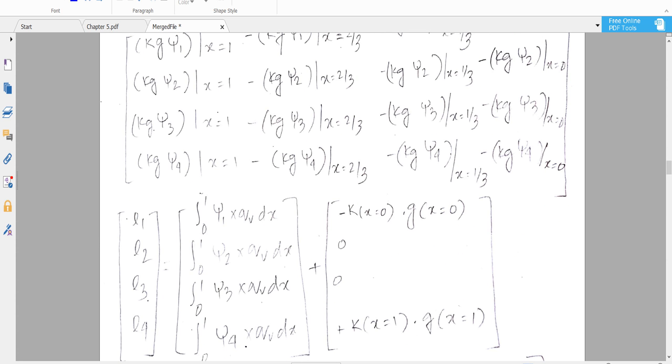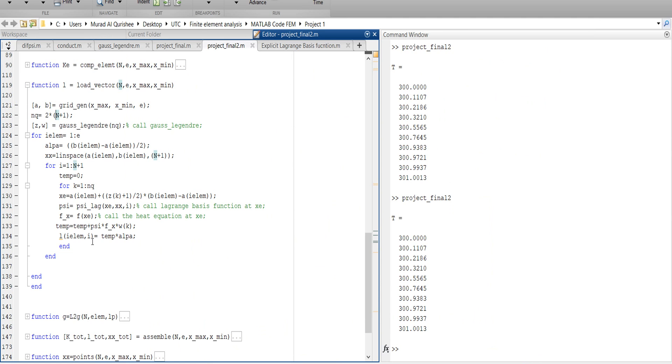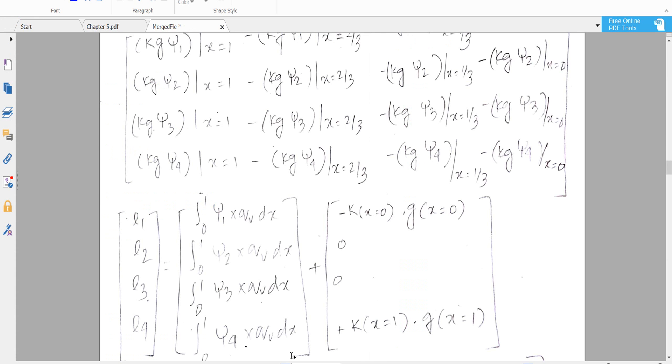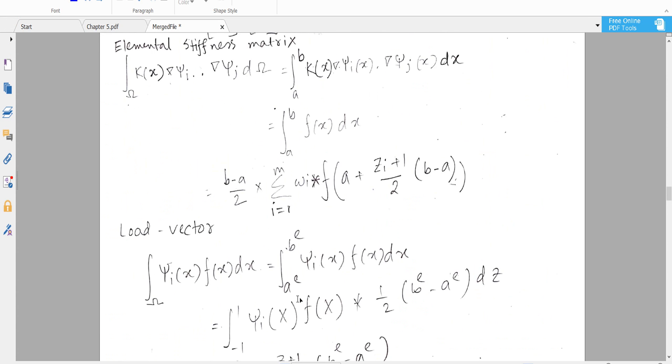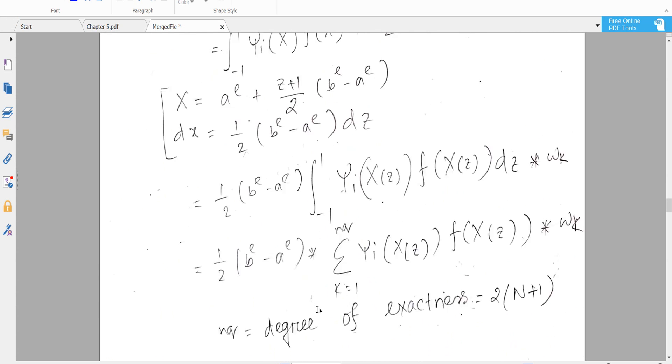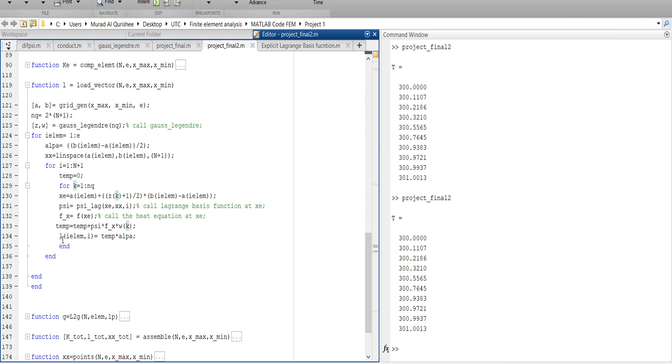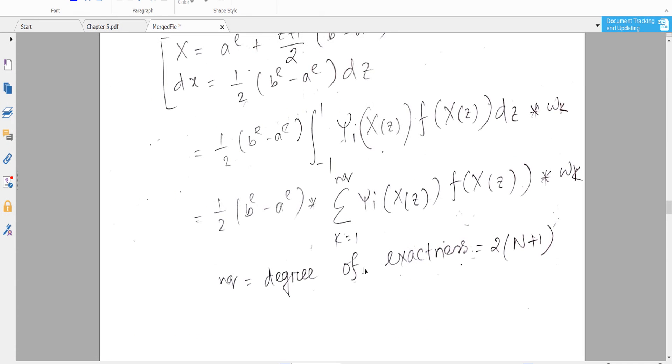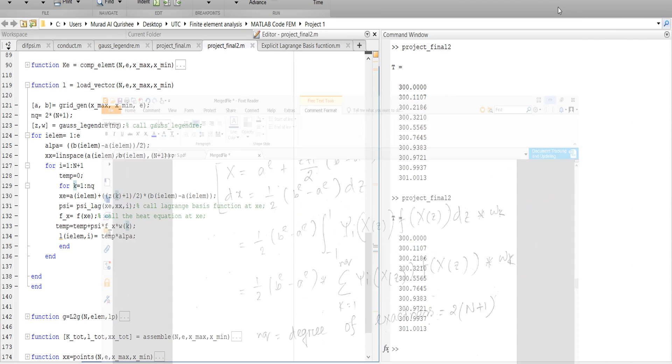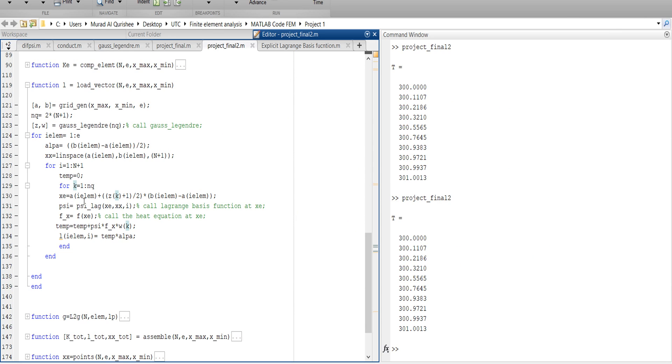At the end we multiply this temporary value by f(X) and W_K, and then add it. There is a summation, you see there is a summation. That's why we are adding it. And at the end we multiply this one by alpha divided by 2.